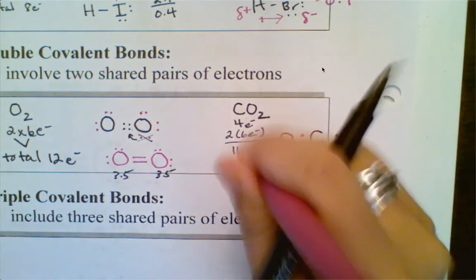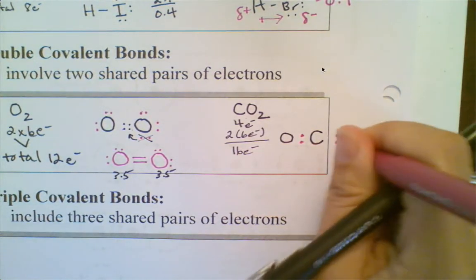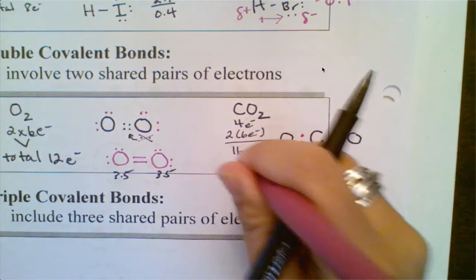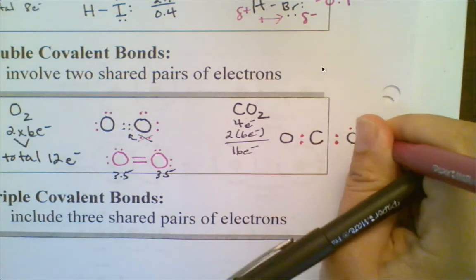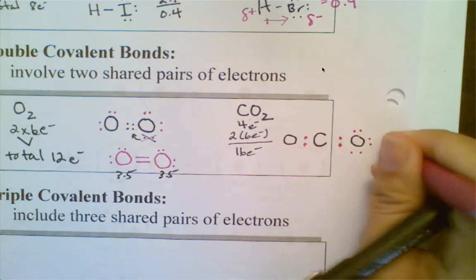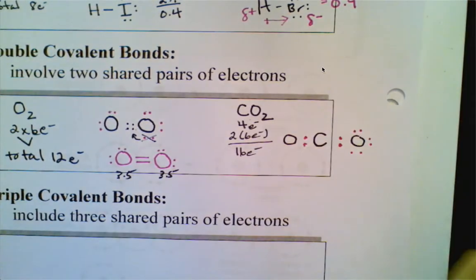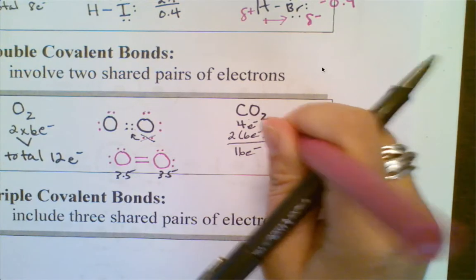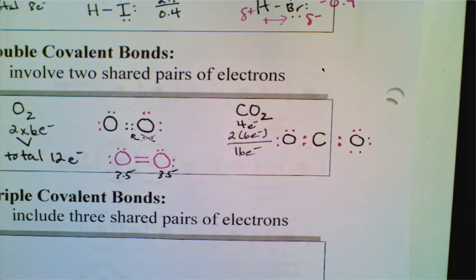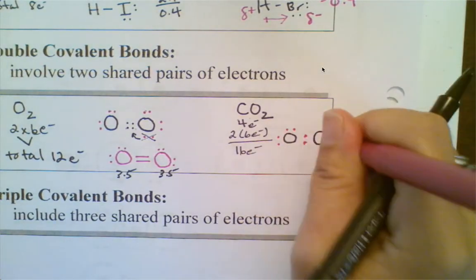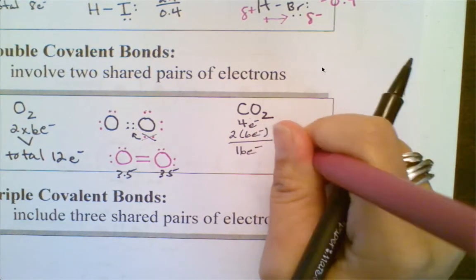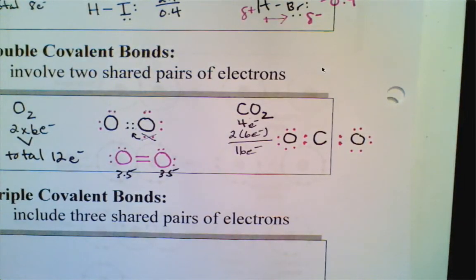Then you go to the peripheral atoms and you fill their octets. So here I have 2, 4, I need to get to 16. So 6, 8, 10, 2, 4, 6, 8, 10. I still have 6 more to look after. 12, 14, 16. All right.